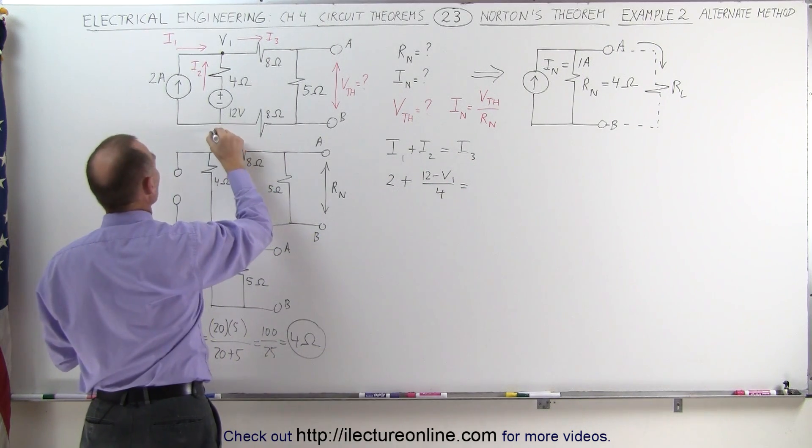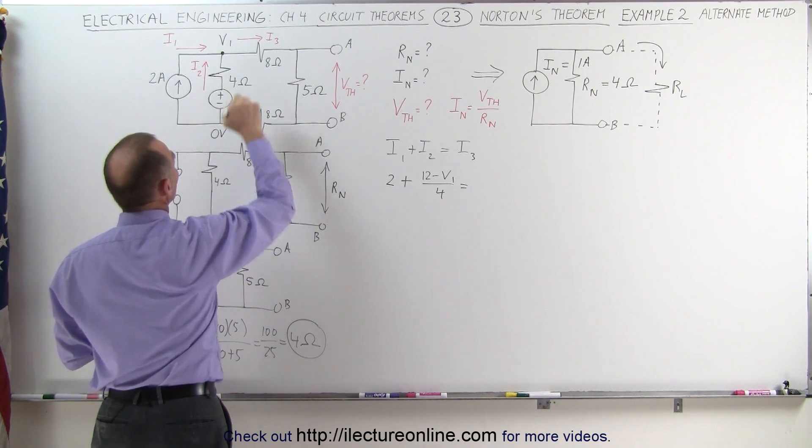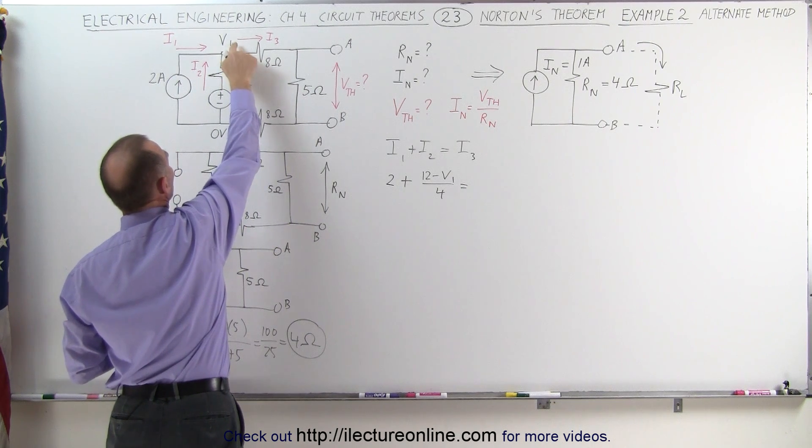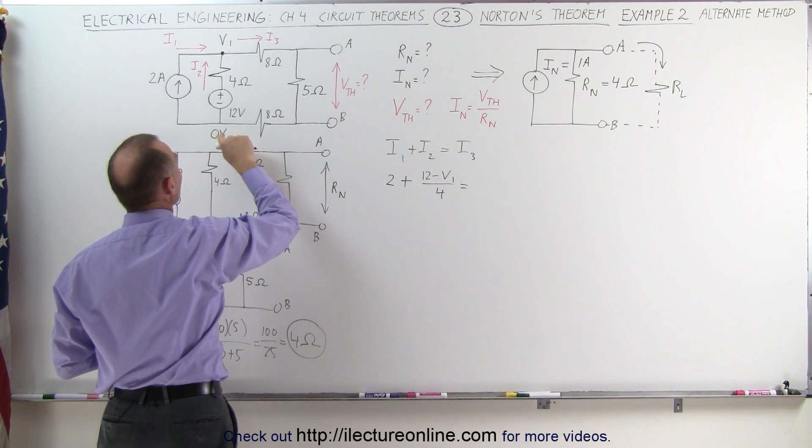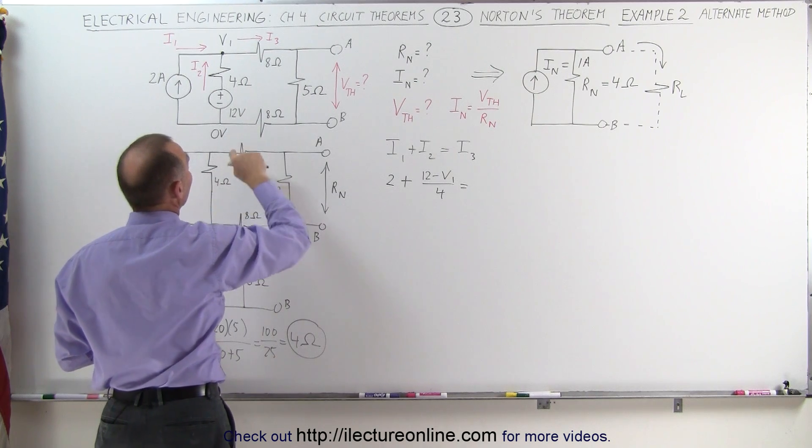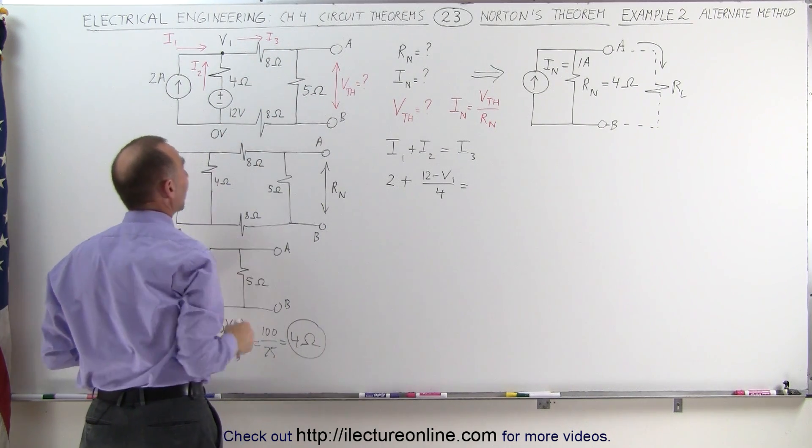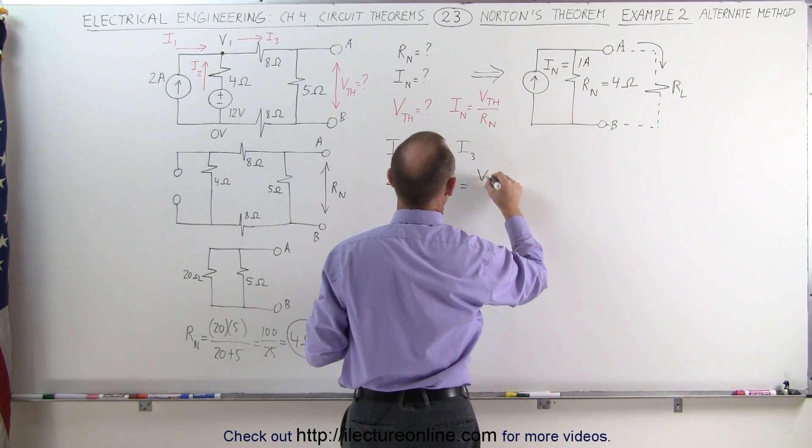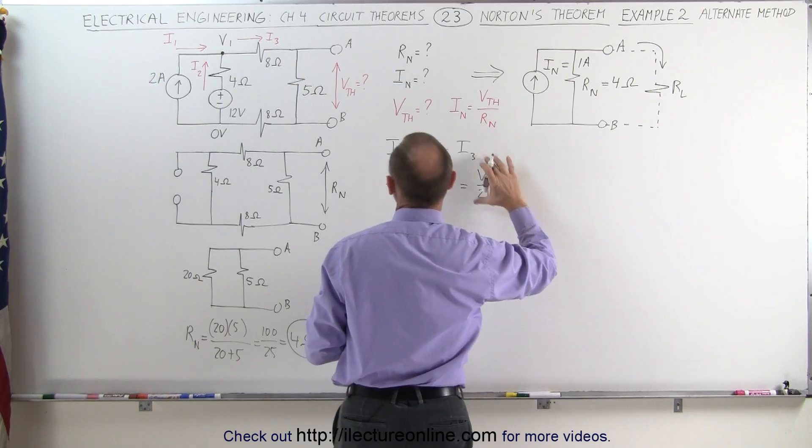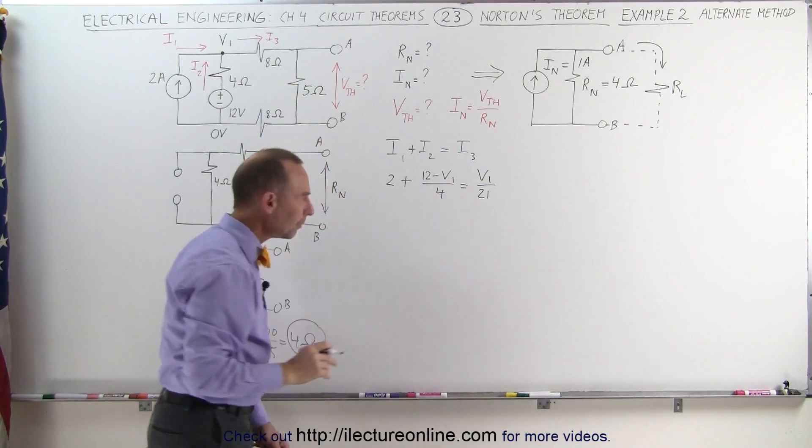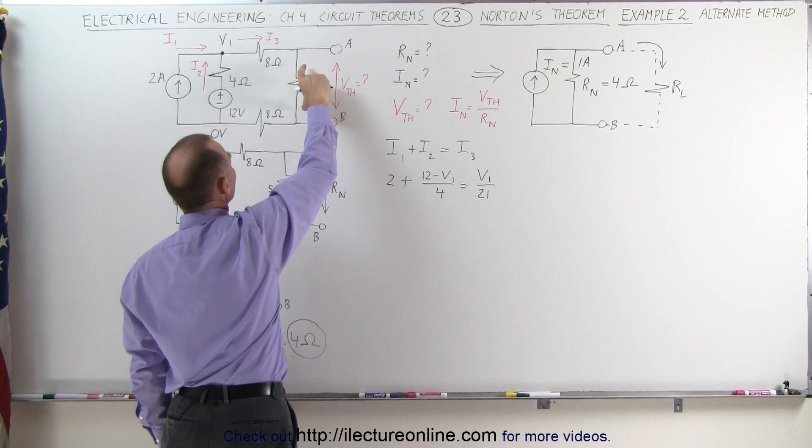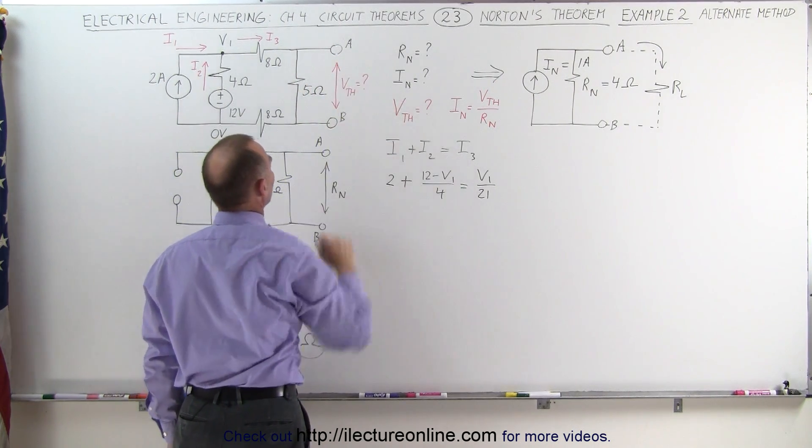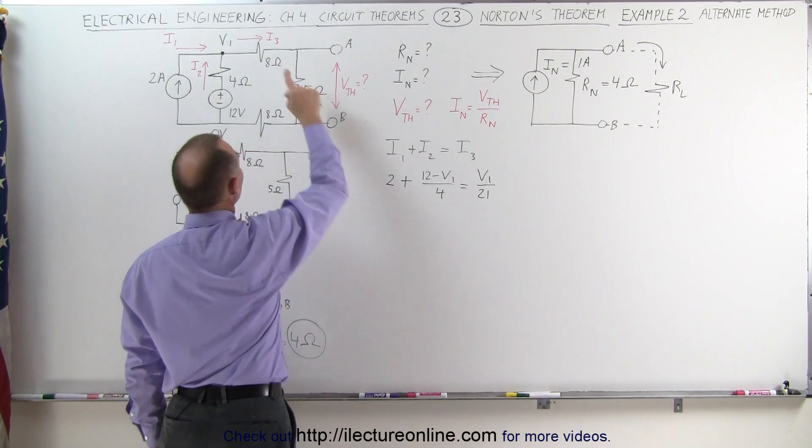Now notice that here this would be 0 volts, and we have current flowing from this point to this point. The voltage difference between V1 and here going around to here would be V1 minus 0, and then the resistance total would be 8 plus 8 plus 5, which is 21 ohms. That means we get V1 divided by 21 ohms is the current I3. Once we know current I3, we can find out the voltage drop across the 5 ohm resistor, which would be the same as voltage Thevenin. So that's what we need to do is find I3.